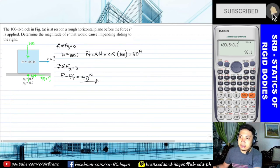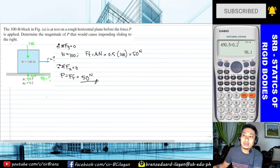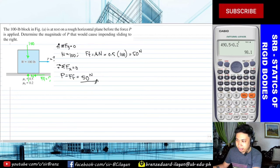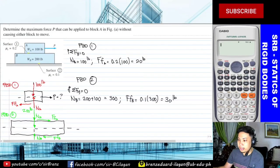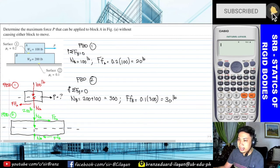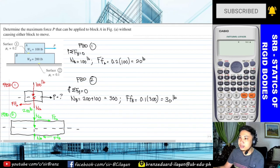Let's proceed to the next example under the category of Type 3. What is the final value of load P? We first analyze free body diagram 1 — for block A alone.